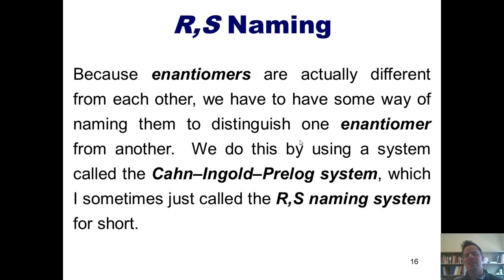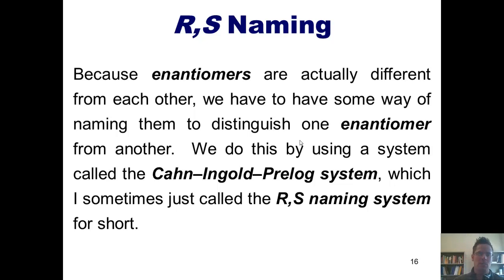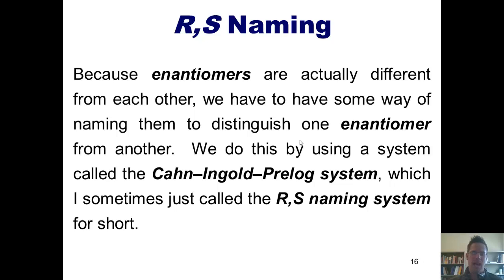Because enantiomers are technically, three-dimensionally, and actually different from each other, we have to have some way of naming them to distinguish one enantiomer from another. We do this by using a system called the Cahn-Ingold-Prelog — or as I just sometimes call it, the RS Naming System for short.